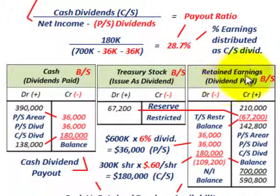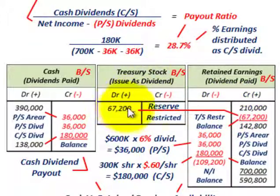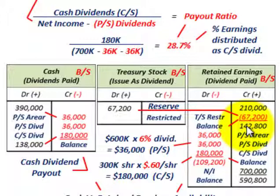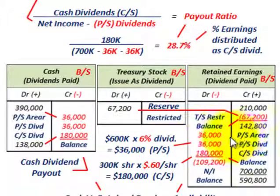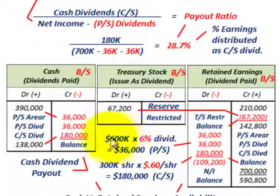Starting with retained earnings for the dividend calculation, we begin with the $210,000 in retained earnings, but we must set aside an amount for treasury stock. The legal requirement is that retained earnings available for payout must be reduced by the cost of treasury stock, leaving us with $142,800 available. Our payout includes preferred stock in arrears, the current year preferred stock dividend, and the common stock dividend.